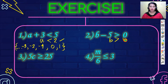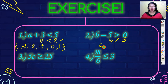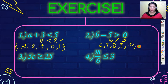For number two, b is greater than five. So the numbers greater than five are six, seven, eight, nine, ten, and so on. Close your set in a brace.